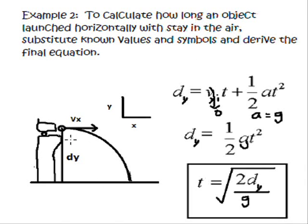Example number two, using the second amigo we described earlier. To calculate how long an object launched horizontally will stay in the air, we'll just substitute and derive the equation to figure out how long it actually stayed in the air. So here's a diagram here.